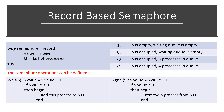So that is the record-based semaphore structure — the values, their meanings, and the wait and signal operations performed on them. In the next tutorial, we will discuss binary semaphores. Keep watching. Goodbye.